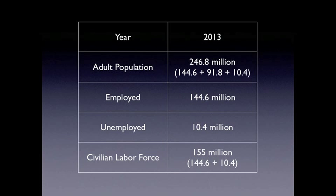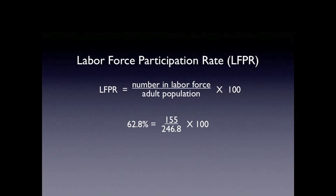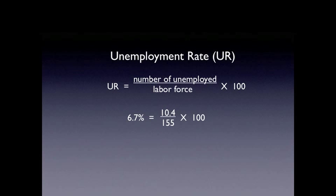The labor force participation rate equals the number in the labor force divided by the adult population times 100. The number in the labor force is 155 million divided by the adult population of 246.8 million times 100, which equals a 62.8% labor force participation rate.